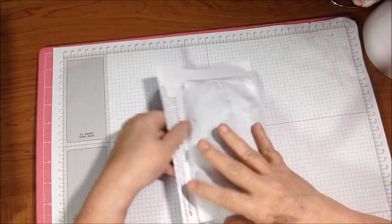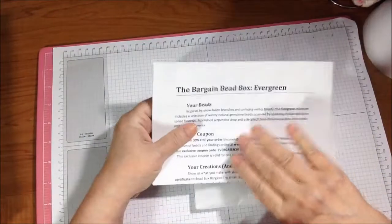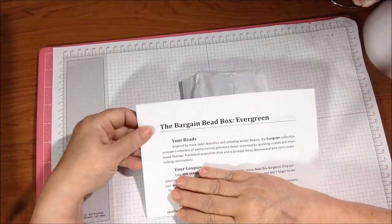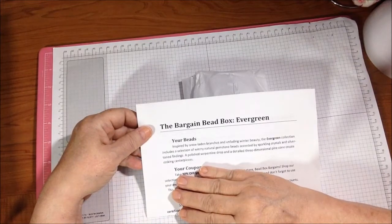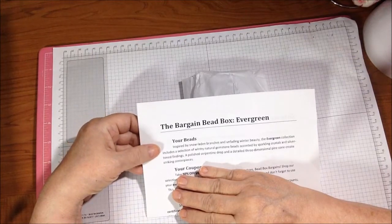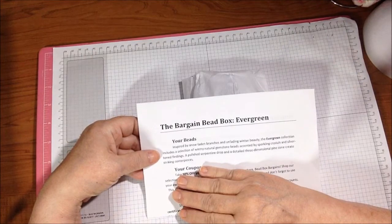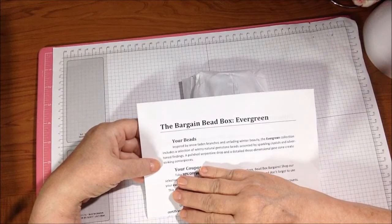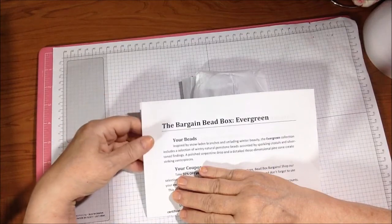And here is the paper that was inside. This month it says inspired by snow-laden branches and unfading winter beauty, the Evergreen collection includes a selection of wintry natural gemstone beads accented by sparkling crystals and silver tone findings. A polished serpentine drop and a detailed three-dimensional pine cone create striking centerpieces.